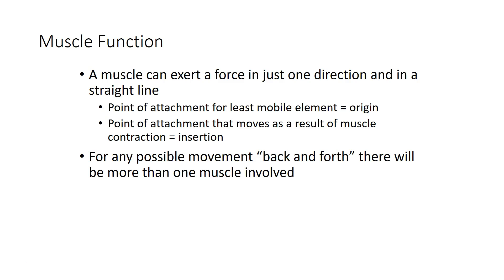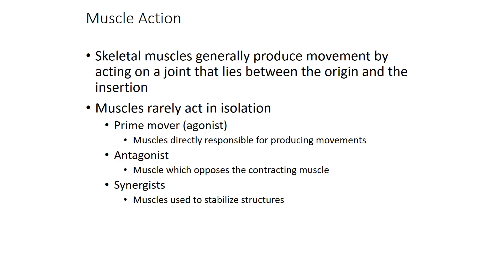For speech, opening the jaw involves muscles contracting in one direction, and closing the jaw involves different muscles contracting in the opposite direction. For any particular movement like closing your jaw, we would have one or more prime movers or agonists — the muscles that make that action happen. To undo that action, there are antagonist muscles that act in the opposite direction. And in some cases there are other muscles that need to act synergistically to stabilize things and make a particular muscular action happen.